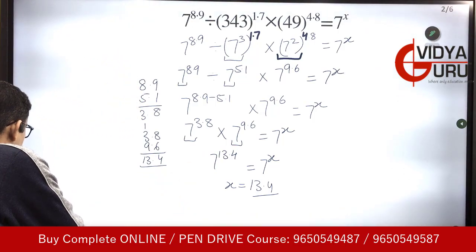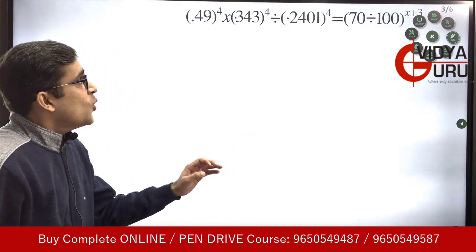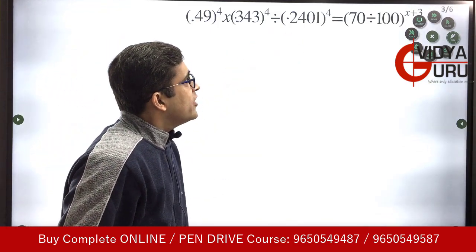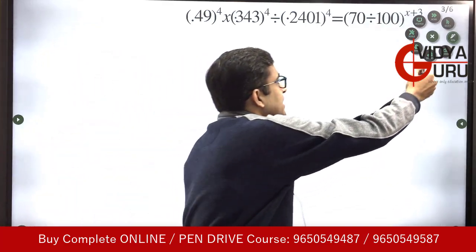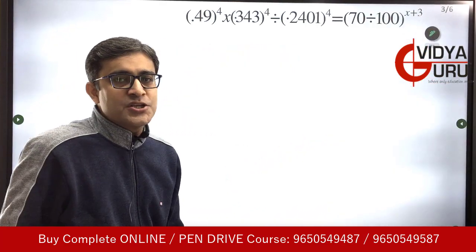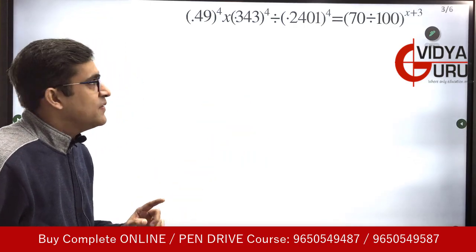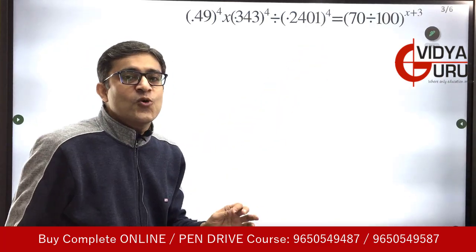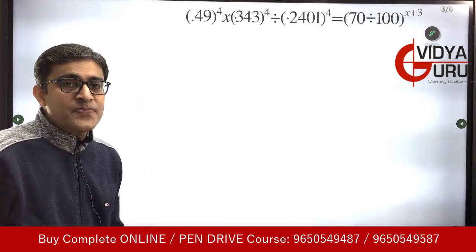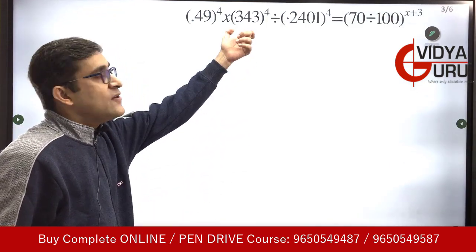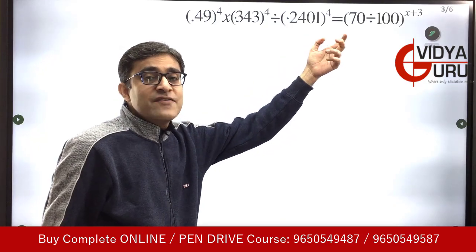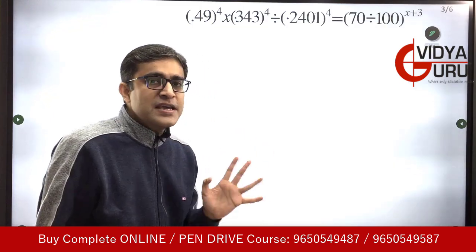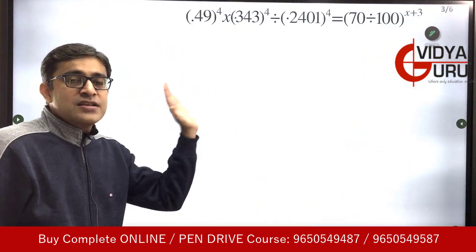Another very interesting question. Look at the question now. We have 0.49, we have 0.343, and 0.2401. Let's see how we are going to solve this past exam question. Think of 2401 — how can it be written in the form of 7? Students, 7 cube is 343, but 7 raised to power 4 is 2401. So we are going to use the properties we just understood regarding bases and exponents.